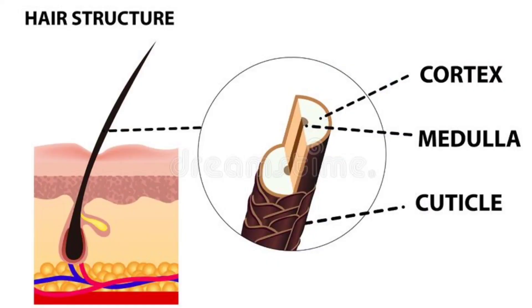Depending on the type of porosity, it tells you how easy it is to absorb moisture and retain it. Porosity deals with the cuticle layer of your hair — how tight or spaced those cuticle layers are determines your porosity. The cuticle layer is the outer layer of the hair strand, and based on your porosity it is either wide open, a little bit open, or closed very tightly.